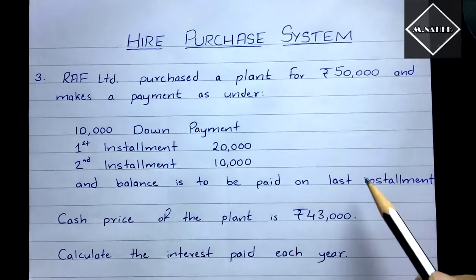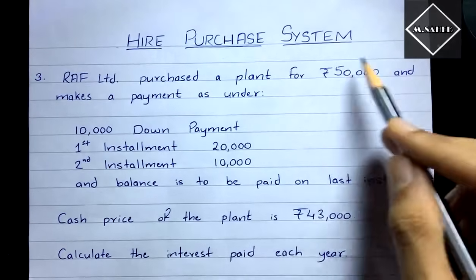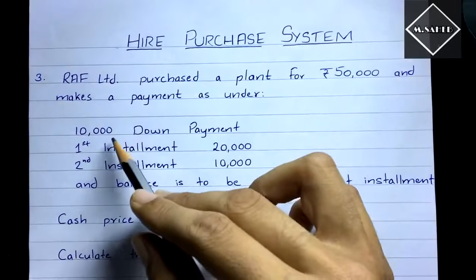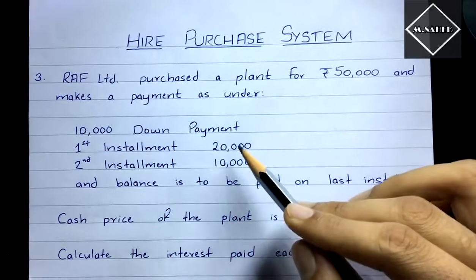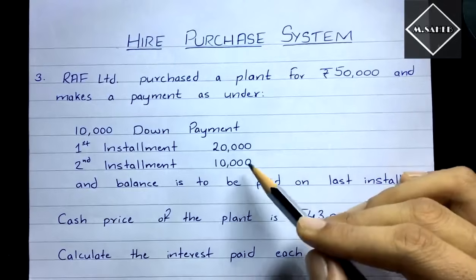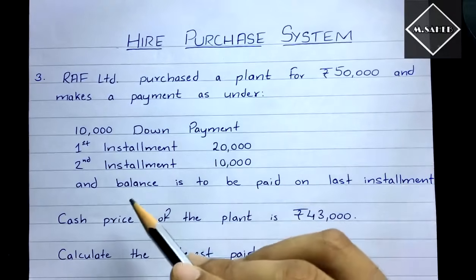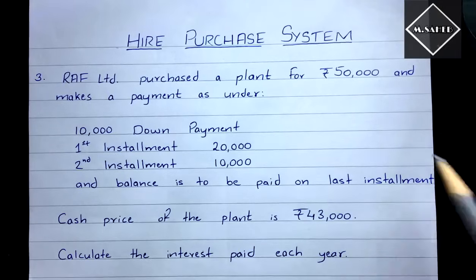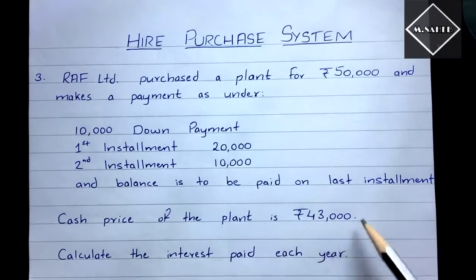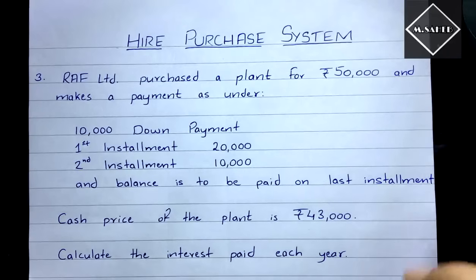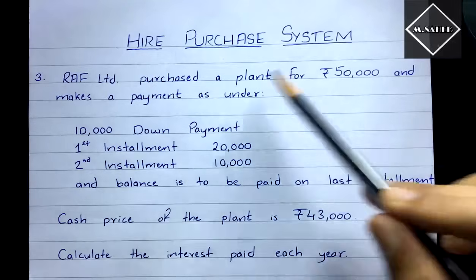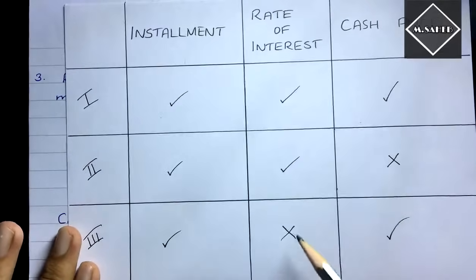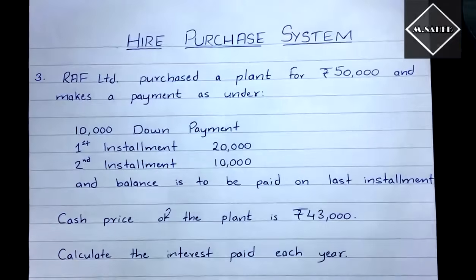We can easily calculate the third installment: 50,000 minus 10,000 is 40,000 outstanding, minus 20,000 is 20,000 outstanding, minus 10,000 leaves 10,000. So the third installment is 10,000. The cash price of the plant is given as 43,000. We need to calculate the interest paid each year — no rate of interest is given, which is why this is a third scenario problem.